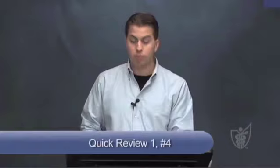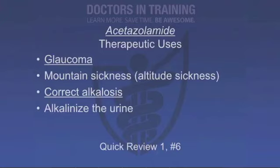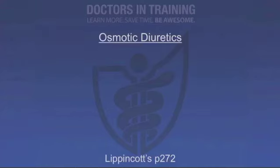What class of diuretic directly affects principal cells? Potassium-sparing diuretics. What class works at the sodium-potassium chloride co-transporter? Loop diuretics. What are the various uses for acetazolamide? It's not commonly used as a diuretic. It's commonly used to treat glaucoma, mountain sickness, and altitude sickness. It can correct a respiratory or metabolic alkalosis. It can also be used to alkalinize the urine. That's it for Quick Review 1 — let's get back to the main lecture.